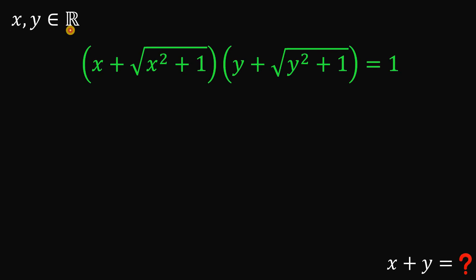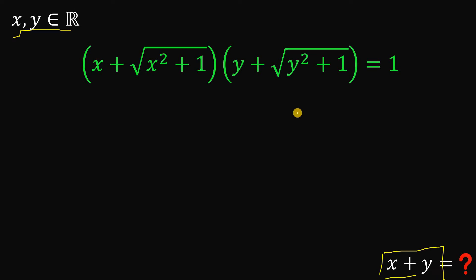x and y here are real numbers. Given this equation — the product of x plus square root of x squared plus 1, and y plus square root of y squared plus 1, equals 1 — our goal is to find the numerical value of x plus y. Given one equation, our goal is to find the sum of x and y.